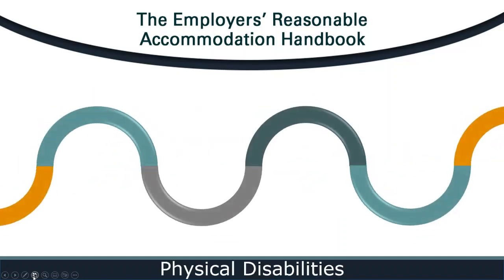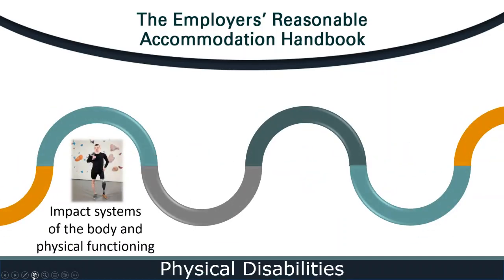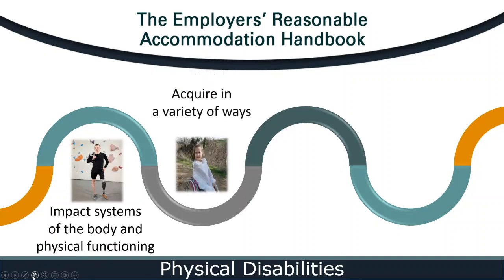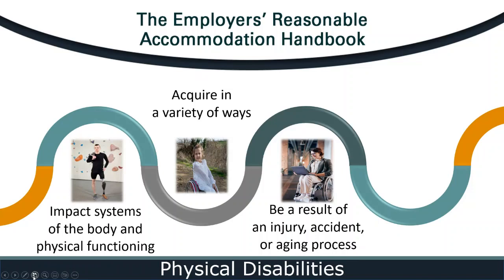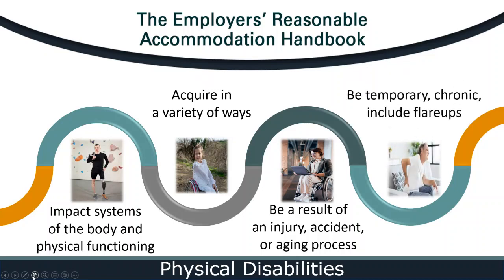Sure. Physical disabilities can impact the systems of the body and the physical functioning of the body. A person can acquire a physical disability in a variety of ways. One way is through a congenital condition, which means the condition occurs at or before birth. Another way is from a developmental condition or another medical condition. A physical disability can also be a result of an injury, an accident, or the aging process. Physical disabilities can also be temporary, chronic, and include periods of exacerbations or flare-ups. What are some medical conditions that can lead to physical disabilities?